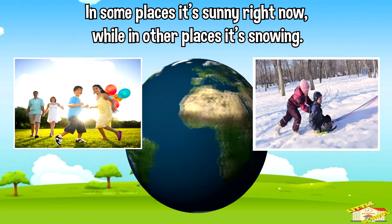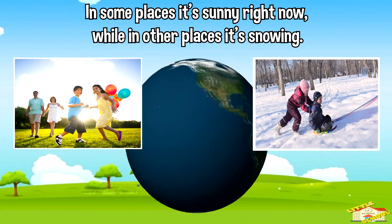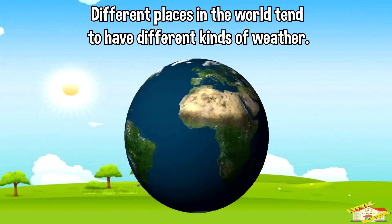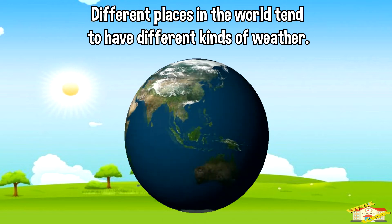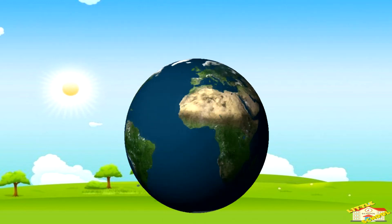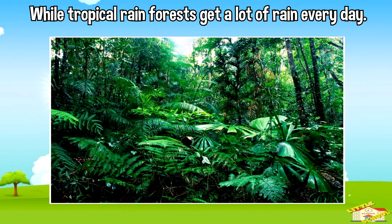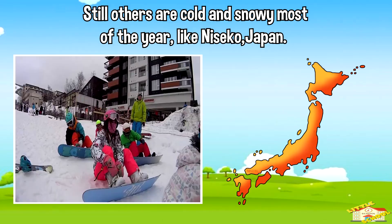In some places it's sunny right now, while in other places it's snowing. Different places in the world tend to have different kinds of weather. Some places like Yuma, Arizona are warm and sunny for much of the year, while others like the tropical rainforest get rain mostly every day. Others are cold and snowy most of the year, like Niseko, Japan.